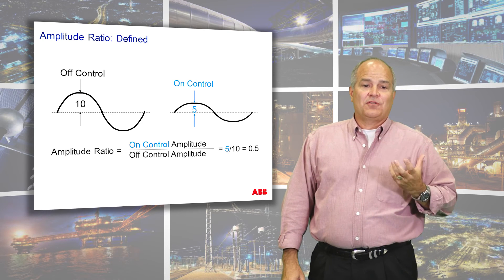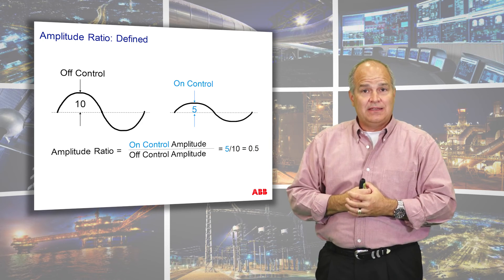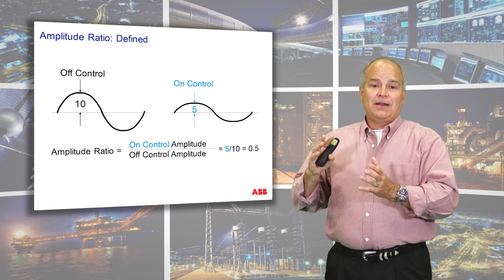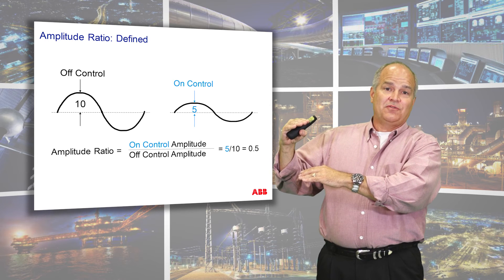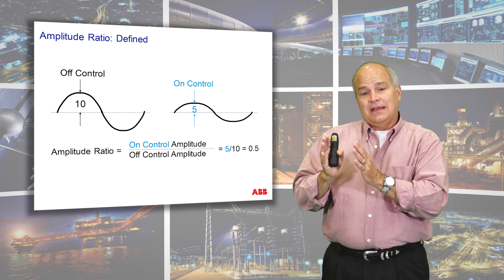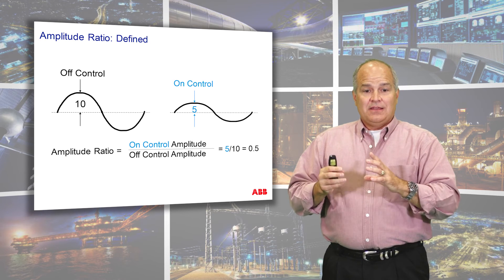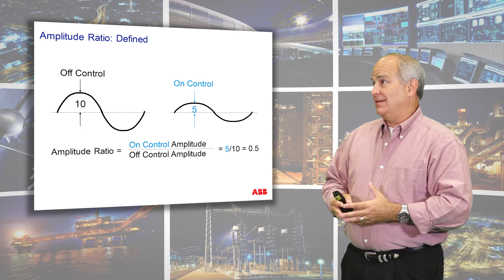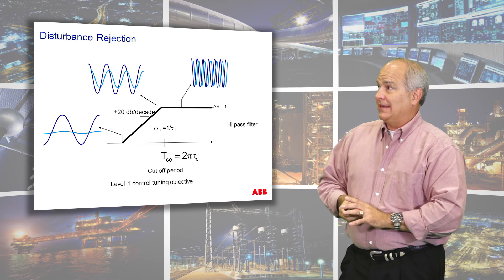For example, if my off-control process had an oscillation with an amplitude of 10 and then I turned the control on, I would expect — let's say — an amplitude ratio of 0.5 afterwards. And then depending upon the phase shift, you could actually calculate what the attenuation characteristics of that control loop actually are, which is an interesting theory.